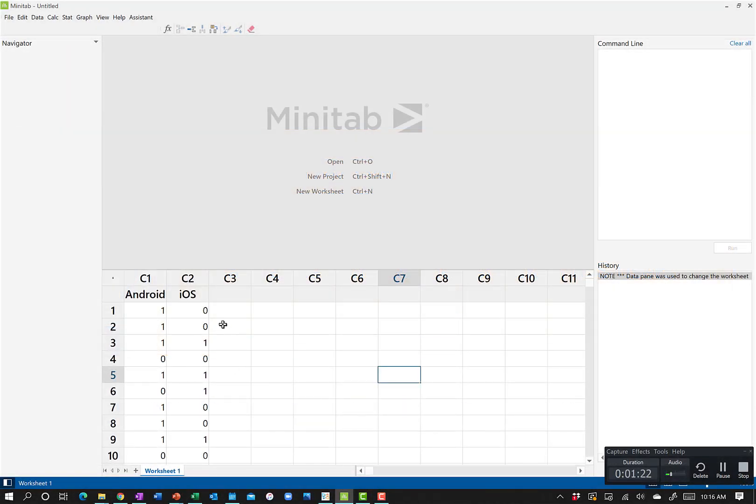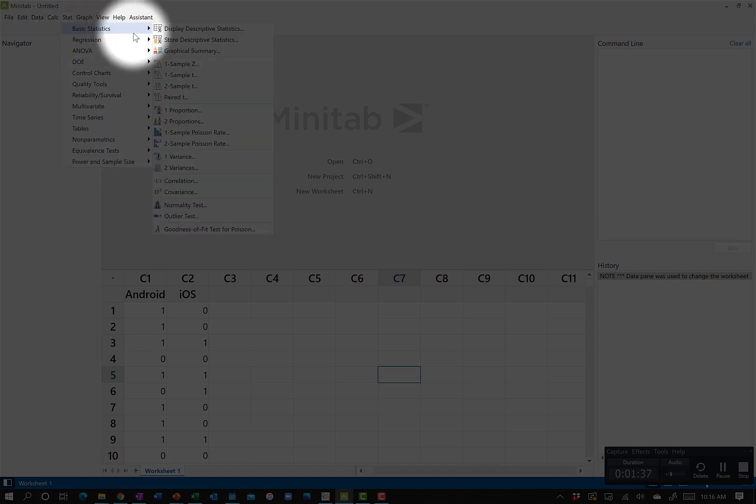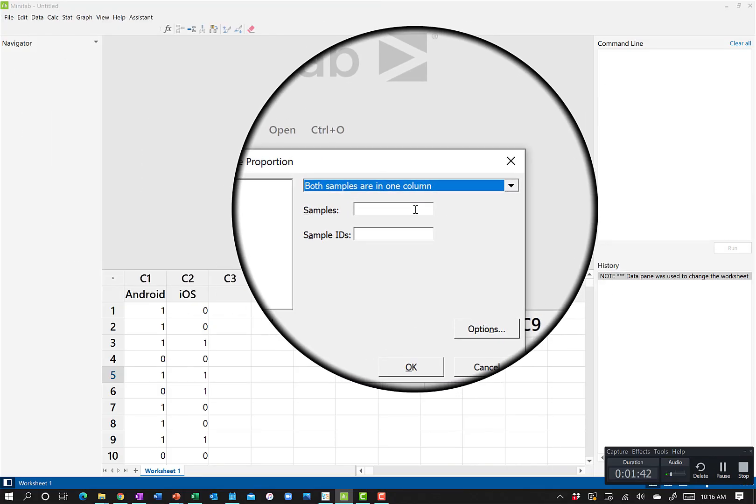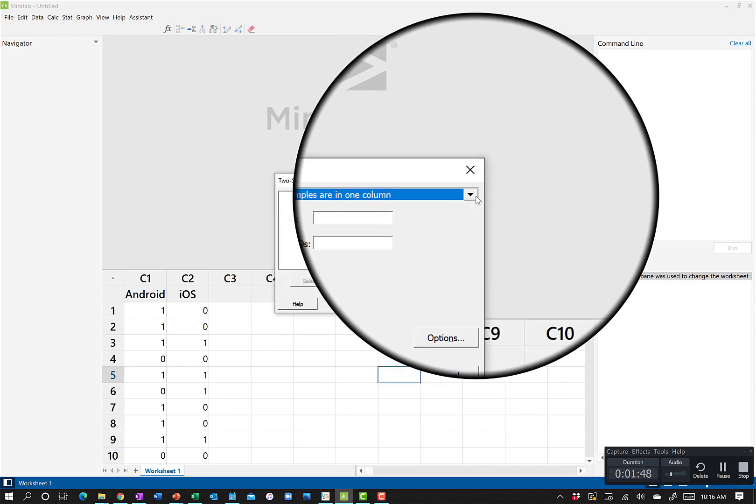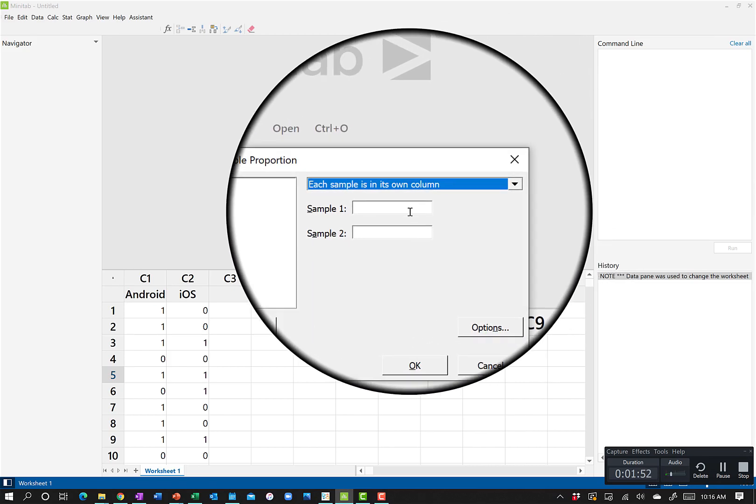All right, so here we are in Minitab. I got the data over. We have 100 random users that had Android operating system, 100 random users that had iOS. For each one, we're seeing if they turn on a certain feature. To run the two sample tests of proportions, we'll come to Stat, Basic Statistics, and then Two Proportions. You can either have your data set up in one column which says Android or iOS, and the other says zero or one.